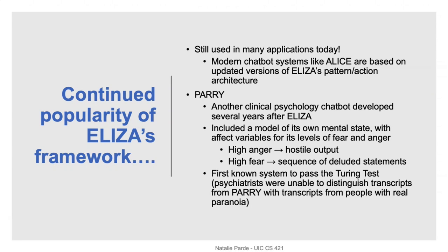Even though ELIZA is quite old, it's still used in many applications today, speaking to the longevity of this approach. A related clinical psychology chatbot called PERRY was actually the first known system to pass the Turing test — a popular AI test in which people try to determine whether they're interacting with a chatbot or a real person. The idea is that if someone cannot accurately identify your system as a chatbot, it is exhibiting intelligent behavior, though determining intelligence in practice remains a complex and unresolved question.